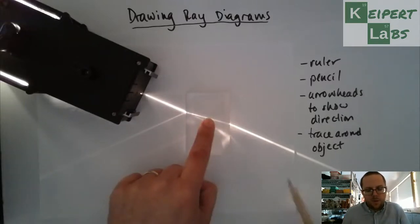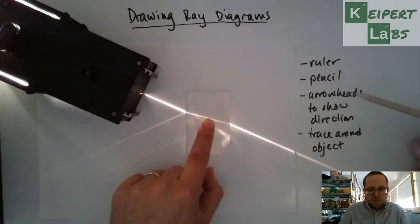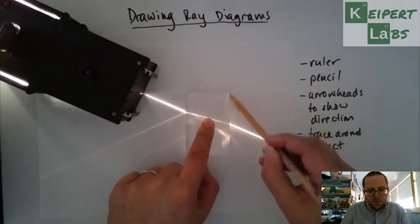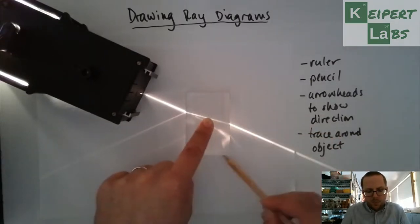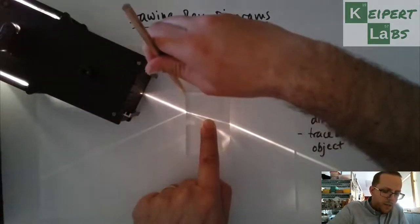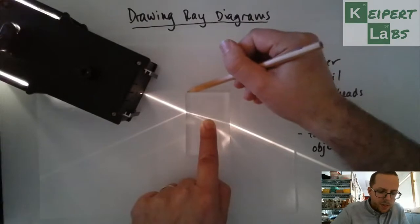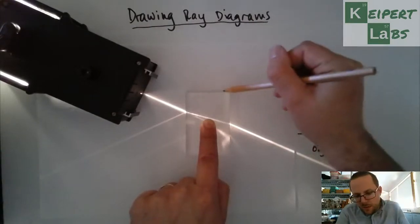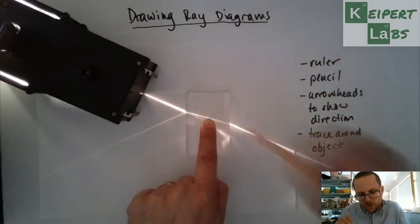So what I'm going to do now is I'm going to use my pencil and I'm going to trace my object first. So unlike I did with the mirror, I'm actually going to trace all the way around this one because you can see that where the light enters and exits the prism is going to be quite relevant to this diagram. So I'm going to make sure I capture all the surfaces adequately.